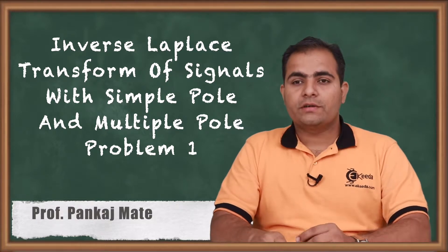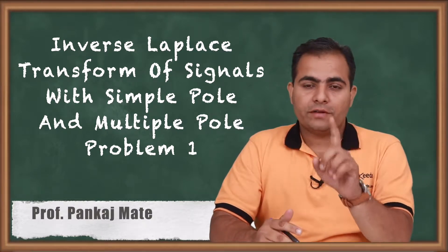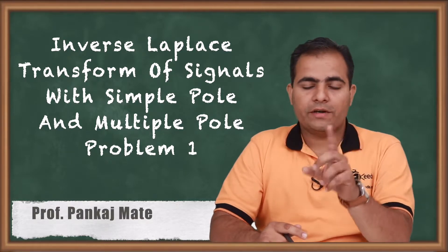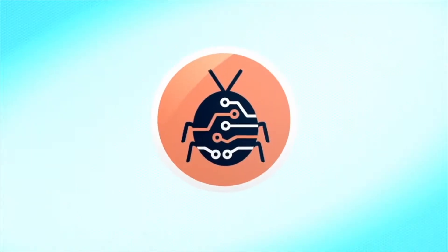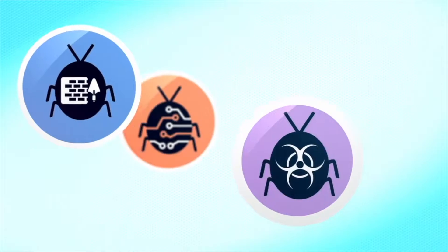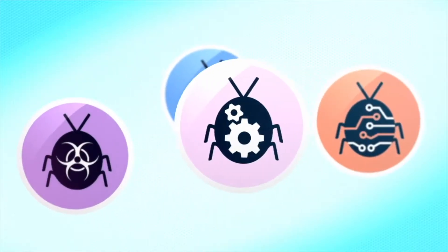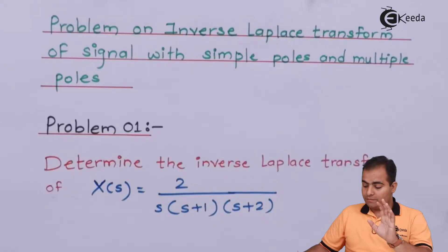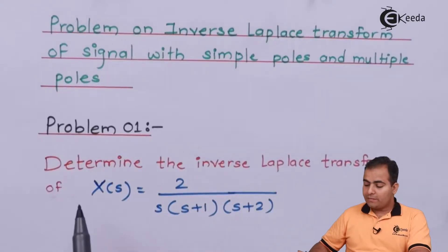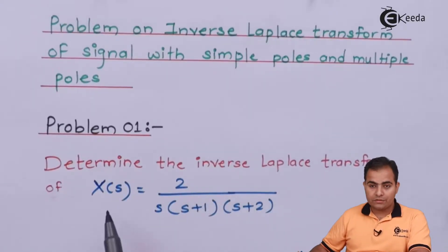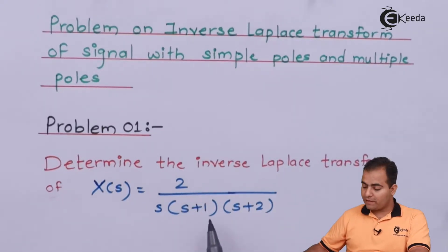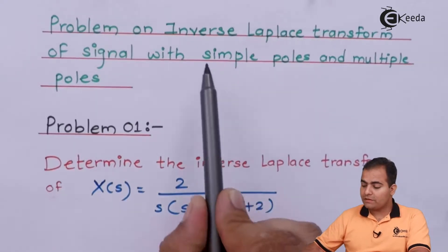So let's go through the question. We are going to study problem number 1, which is based on inverse Laplace transform of simple pole and multiple poles. The question is: determine the inverse Laplace transform of X of S, where the function is 2 upon S into S plus 1 into S plus 2. The current example is based on a simple pole.